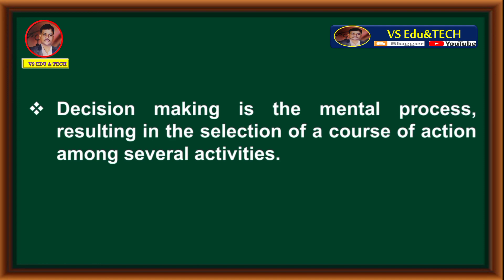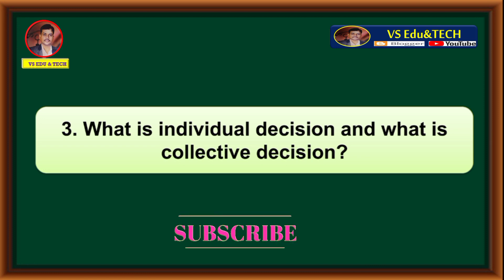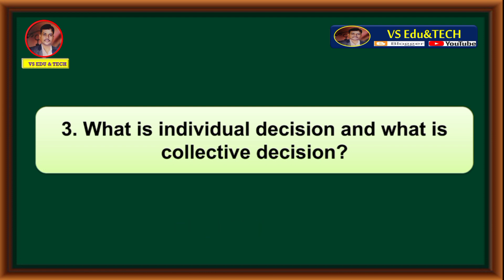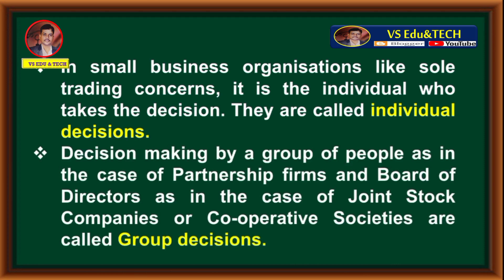Third question: What is individual decision and what is collective decision? Answer: In small business organizations like sole trading concerns, it is the individual who takes the decision; these are called individual decisions. Decision making by a group of people, as in partnership firms, board of directors in joint stock companies, or cooperative societies, are called group decisions.